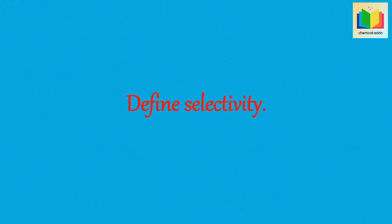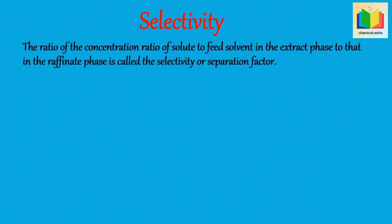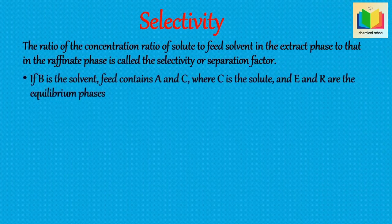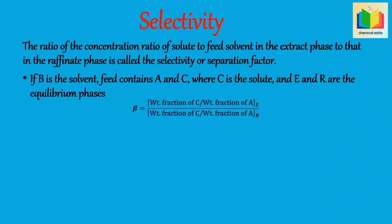Next question: define selectivity. The ratio of concentration ratio of solute to feed solvent in the extract phase to that in the raffinate phase is called the selectivity or separation factor, denoted by beta. If B is the solvent, the feed contains A and C where C is the solute and A and R are the equilibrium phases, then the selectivity or separation factor beta is given by: beta equals the ratio of weight fraction of solute C to weight fraction of feed solvent A in the extract phase, divided by...